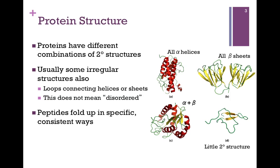Proteins can have different combinations of these patterned structures. In part A, we have a protein that's all alpha helices. B is all beta sheets. C is a combination of alpha and beta. And D has very little secondary structure. So there are very many possibilities. In each of these cases, there is some irregular part to the structure — loops connecting the alpha helices, shown as green ribbons, and also loops connecting the beta strands.